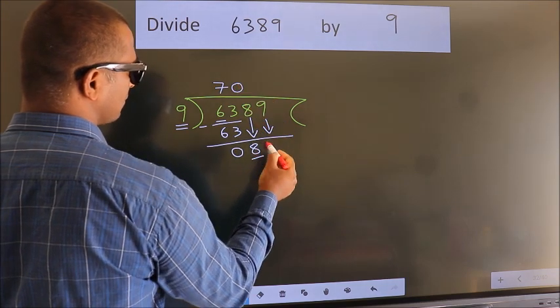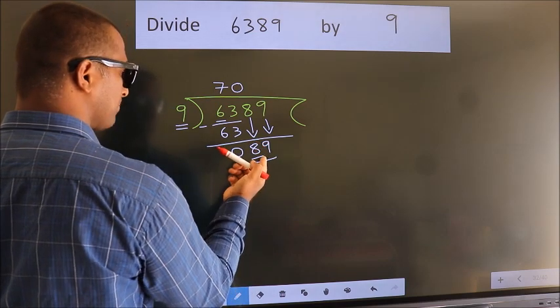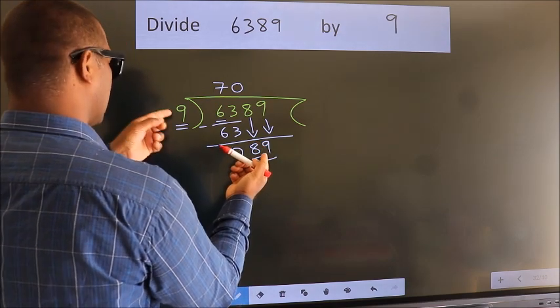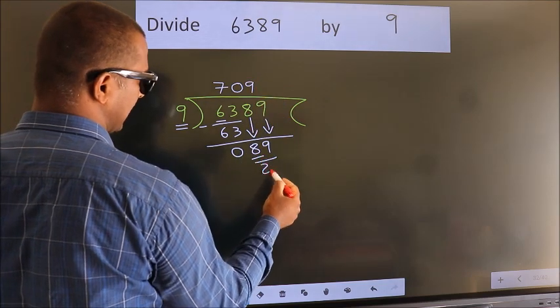Then only we can bring down this number. So, 89. A number close to 89 in 9 table is, 9 9s, 81.